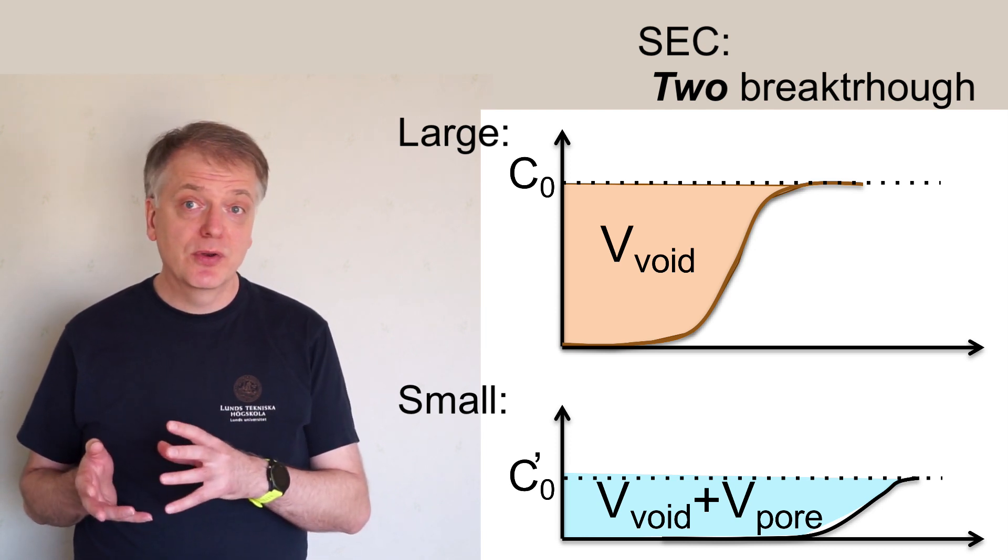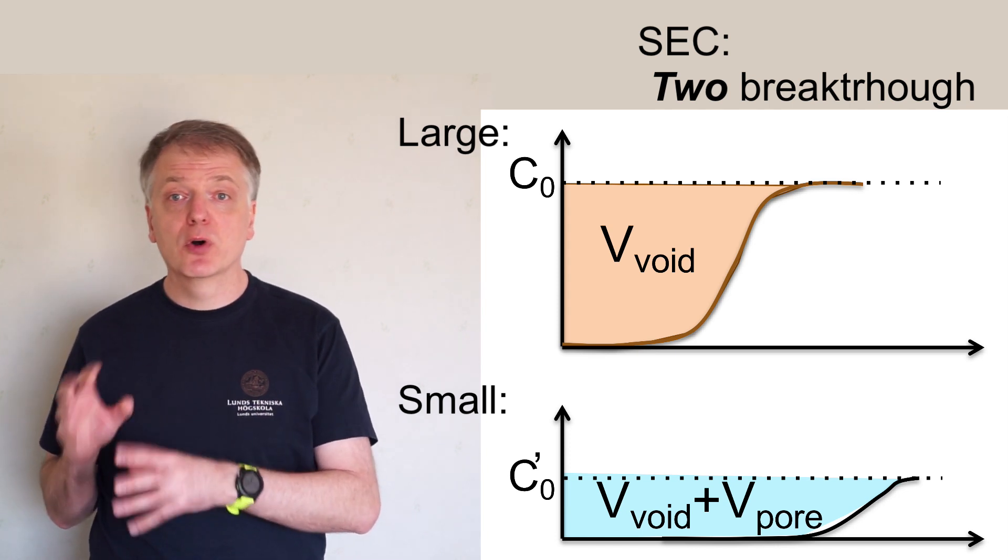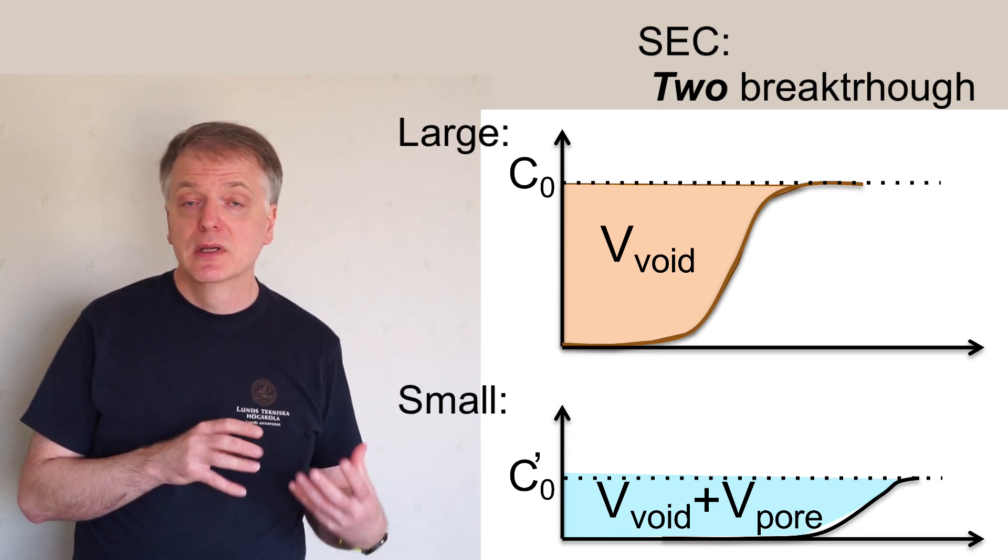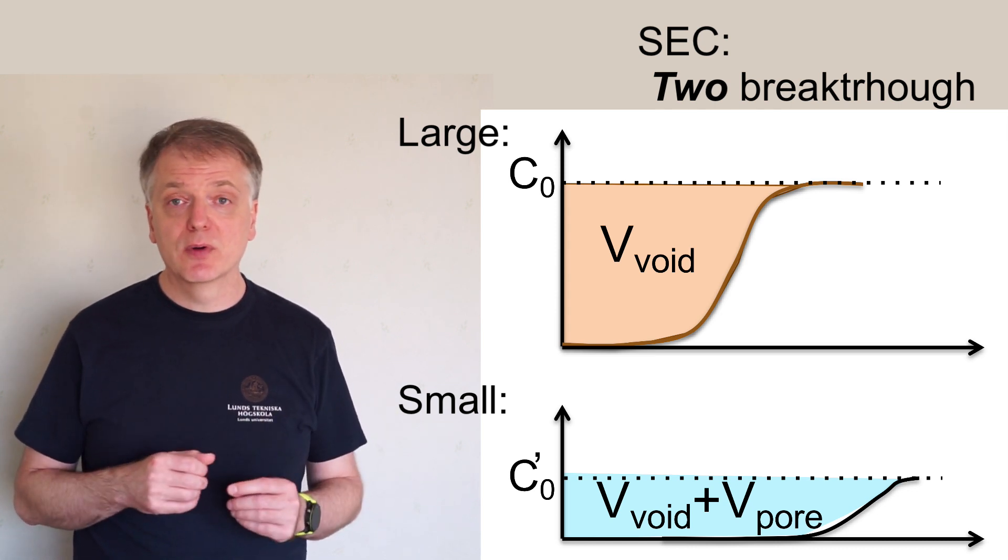The area above the breakthrough curve for the small molecules is proportional to the sum of the void volume and the pore volume, since the small molecules can travel between the void volume and the pore volume.